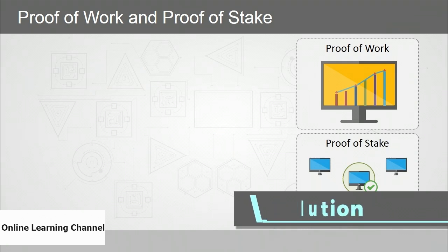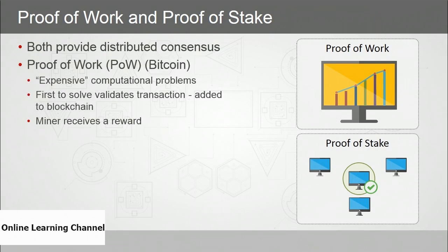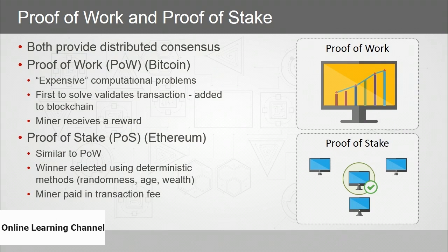Both proof-of-work and proof-of-stake provide distributed consensus. Proof-of-work, exemplified by Bitcoin, involves solving expensive computational problems. The first user to solve the problem validates the transaction, is added to the blockchain, and the miner receives a reward. Proof-of-stake, exemplified by Ethereum, is similar but the winner is selected using deterministic methods — randomness, age on the network, and wealth — and the miner is paid in a transaction fee.